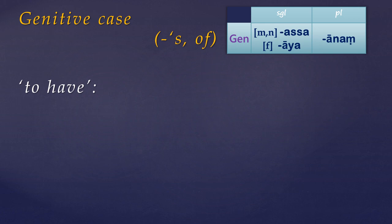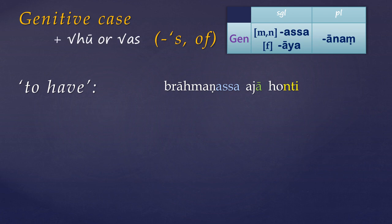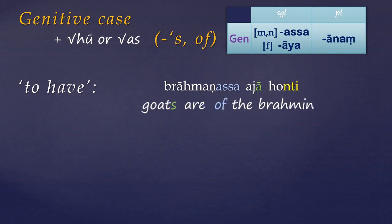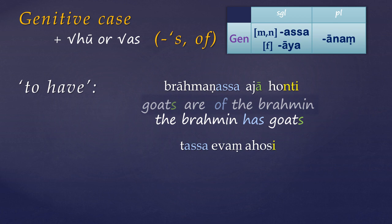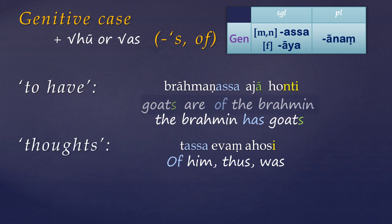The notion 'to have' is commonly expressed in Pali using a noun in the genitive case plus a verb meaning 'to be,' usually from either 'hoti' or 'atthi.' So for example, this literally translates as 'the goats are of the Brahmin,' but means 'the Brahmin has goats.' We haven't seen the pronoun 'tassa' yet, but this literally translates as 'of him, thus was.' Here the genitive implies a sort of internal mental attitude or thought — so 'it occurred to him,' or 'he thought thus.'